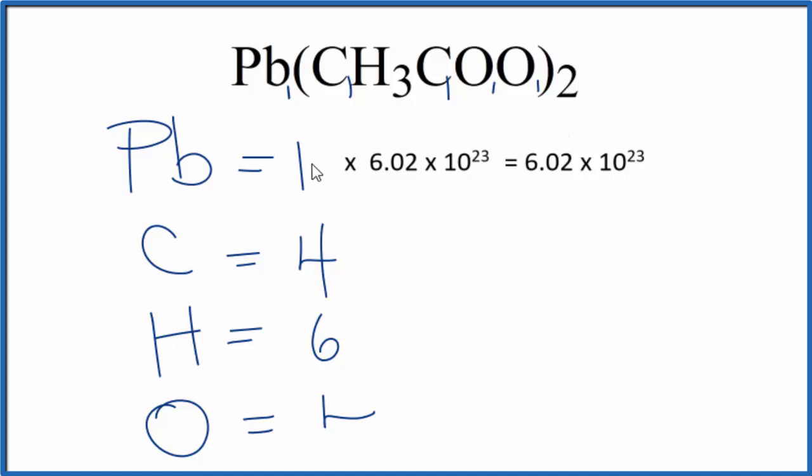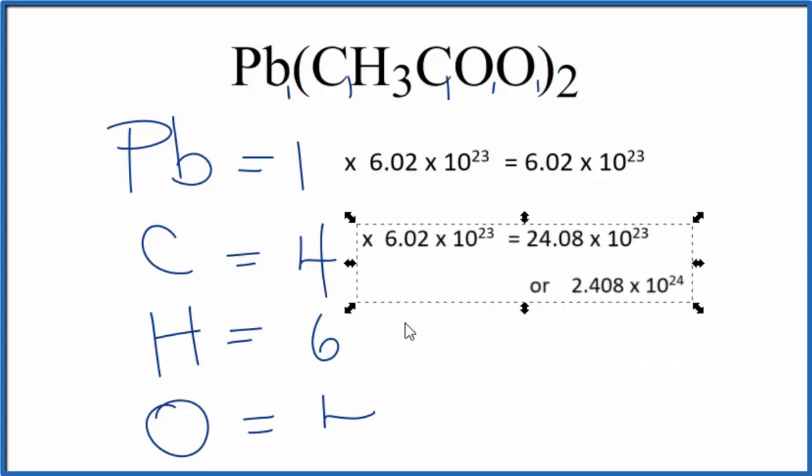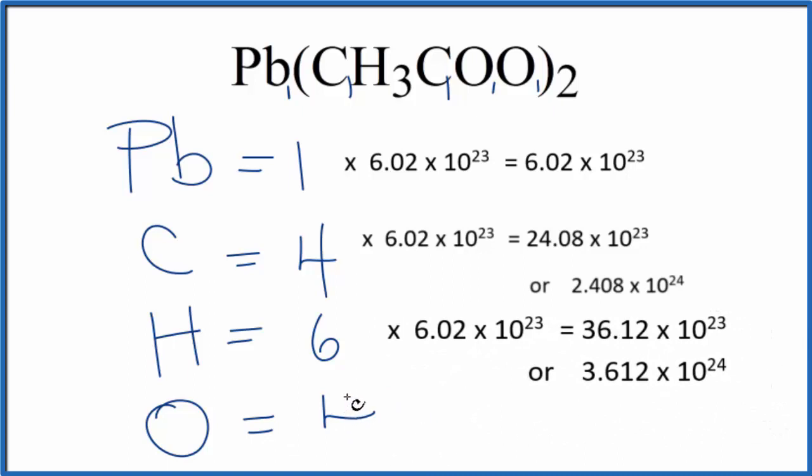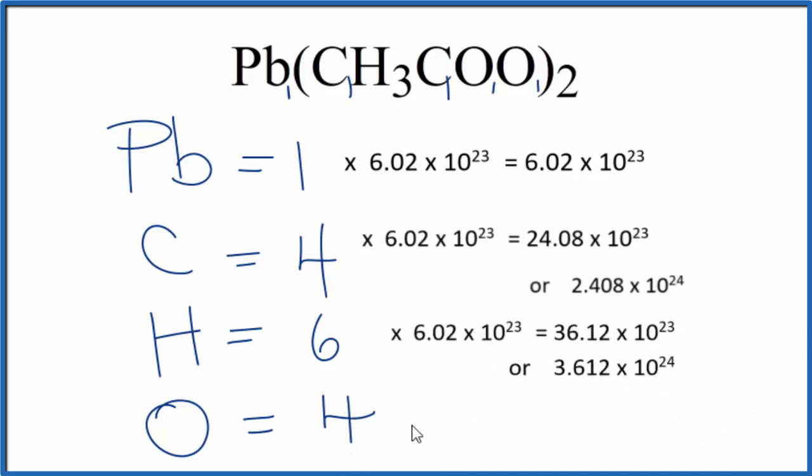That gives us the number of lead atoms in one mole of lead-2 acetate. For the carbon, we would multiply it by four. So four times Avogadro's number. The hydrogen, we could multiply that by six. And then for the oxygen atoms, we have four. We'd multiply that by Avogadro's number. Get the same answer as we had for carbon.